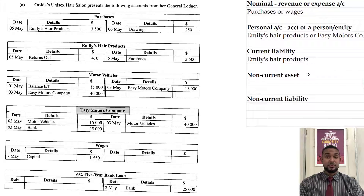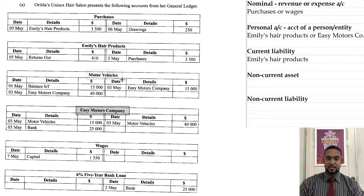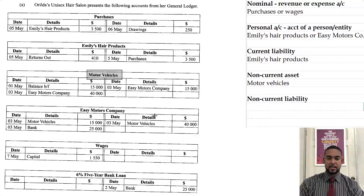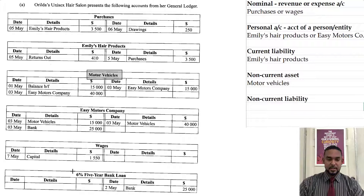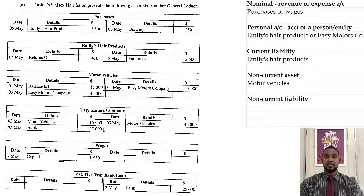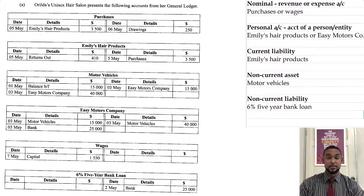A non-current asset used to be called a fixed asset — it's a long-lasting asset. Motor vehicles definitely fits that bill, so we're going to put that as the answer for non-current asset. And non-current liability — we also call these long-term liabilities — that one is the 6% five-year bank loan. Of course, it takes more than one year to pay off a non-current liability, and this one says a five-year bank loan, so that's a relatively easy one to put in.